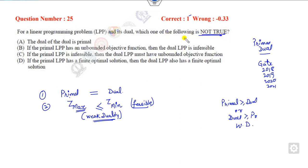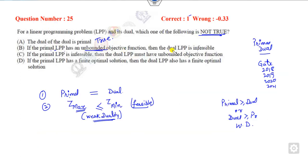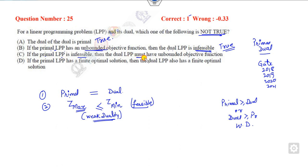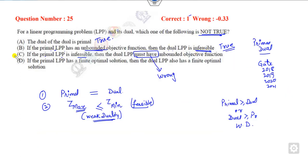The question asks: which of the following is NOT true? Dual of the dual is primal — that is a true statement. If the LPP is unbounded then the dual is infeasible — also true. If the primal is infeasible, then the dual is either unbounded or infeasible. The question states 'the dual MUST have' a certain solution — that is a wrong statement, because the dual is either unbounded or infeasible. So that is the right answer — the statement that uses 'must have' is not true.